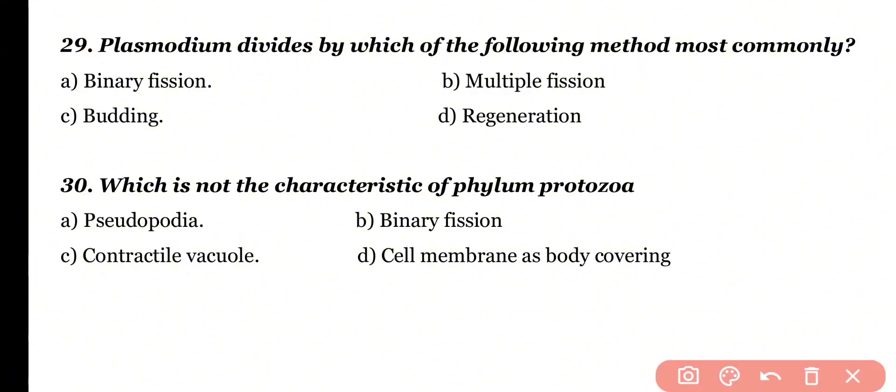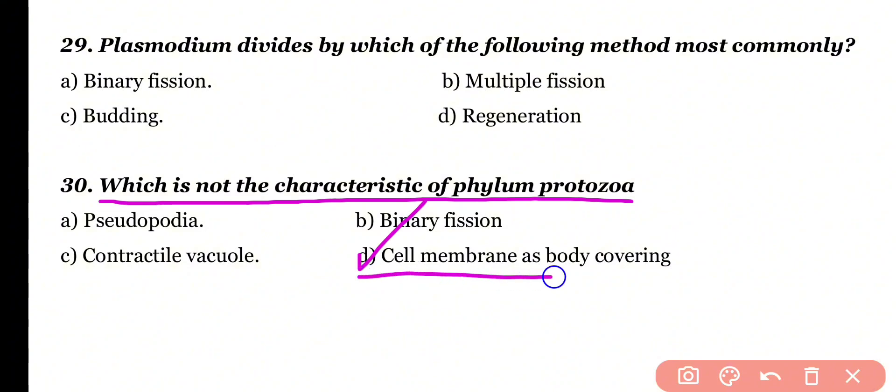Question number 30: Which is not a characteristic feature of phylum Protozoa? Pseudopodia, binary fission, contractile vacuole, or cell membrane as body covering? The answer is option D. The body covering of Protozoa organisms is called pellicle, not cell membrane. So the incorrect characteristic is option D.